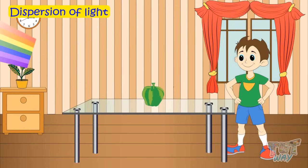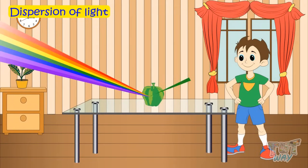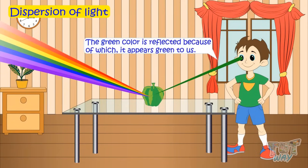If an object is green, it will absorb all the other colors except for green and green color is reflected because of which it appears green to us.